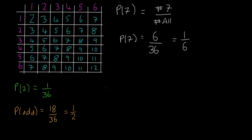The next example is getting the probability of a 10. Probability of a 10 — we just count all the 10s: 1, 2, 3. So that's 3 over 36, and you can simplify that as just 1 over 12.